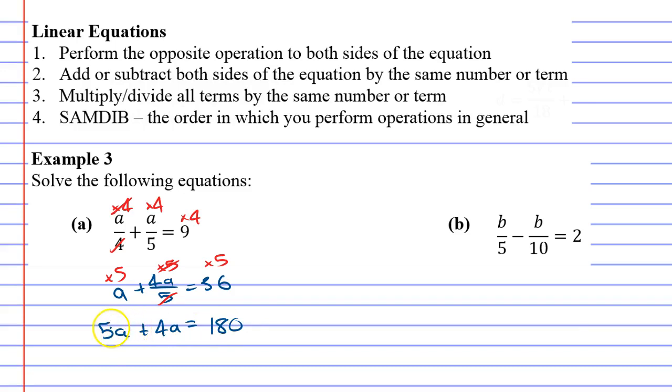Now what we've done is we've got rid of fractions and it makes a lot easier because 5a plus 4a is 9a. All we need to do now is divide by 9, which means that a will equal 20 since 180 divided by 9 is 20.